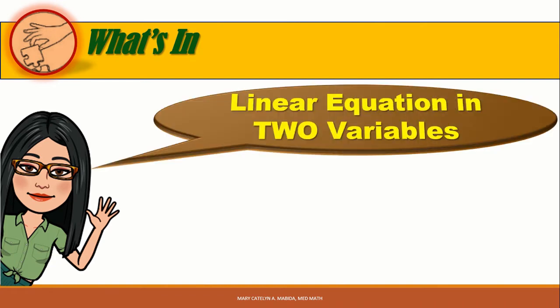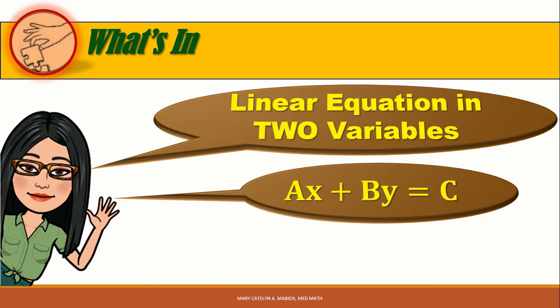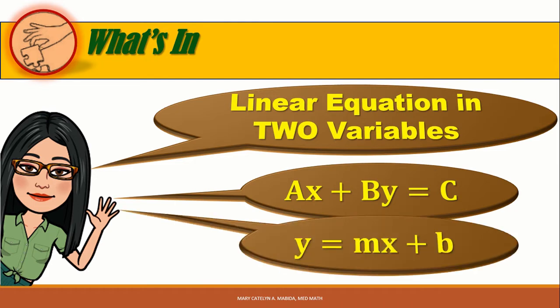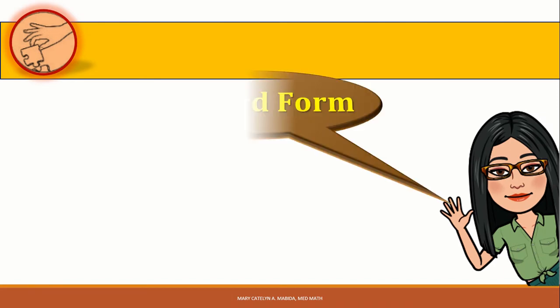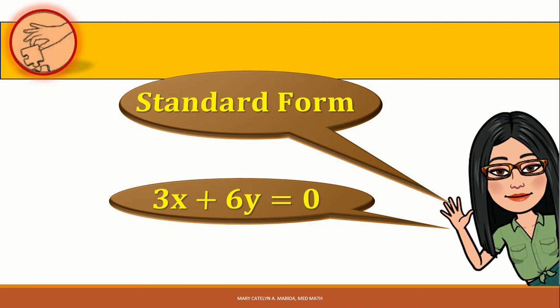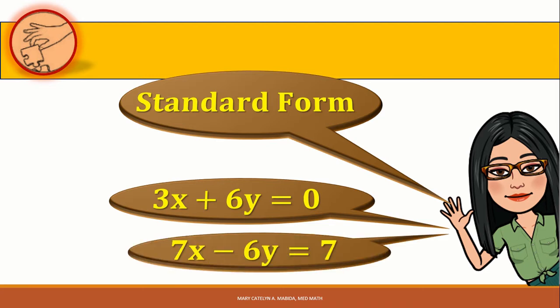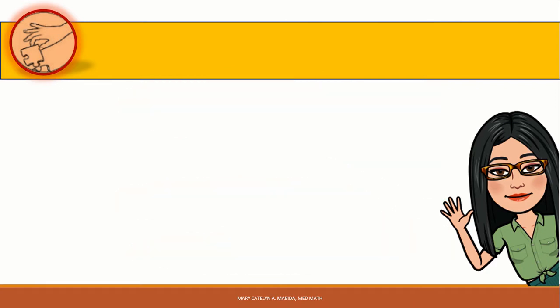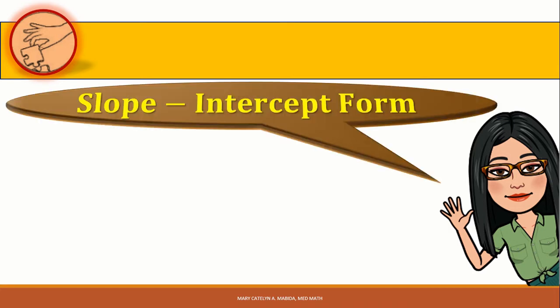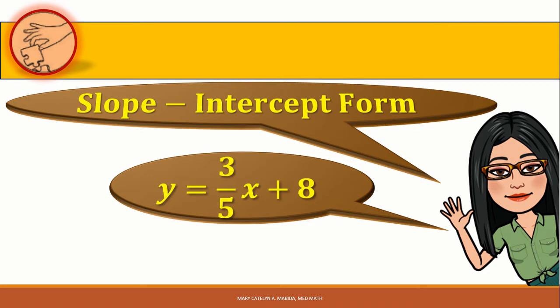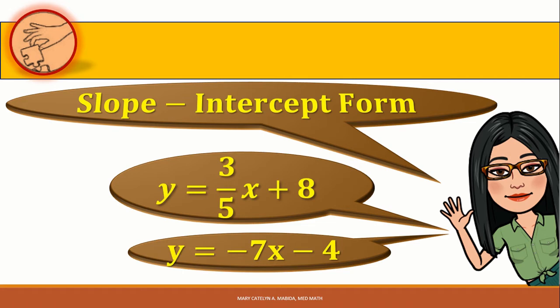Recall that linear equations in two variables have two forms. Examples in standard form: 3x + 6y = 0, and 7x − 6y = 7. Examples in slope-intercept form: y = (3/5)x + 8, where 3/5 is the slope and 8 is the y-intercept; and y = −7x − 4, where −7 is the slope and 4 is the y-intercept.